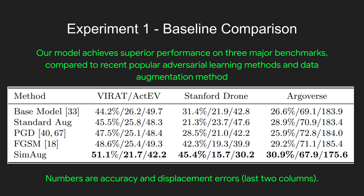Our model achieves superior performance on three major benchmarks compared to recent popular adversarial learning methods, which includes PGD and FGSM, and also data augmentation methods. The numbers shown are accuracy in the first column, and the rest are average displacement errors and final displacement errors. Our method achieves the best performance on all three metrics.